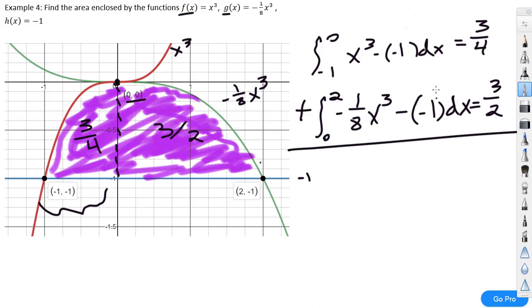So, to find the total area between -1 and 2, or the enclosed area of all three of these functions, I just need to add these together, which is going to give me 9/4. That's my answer.